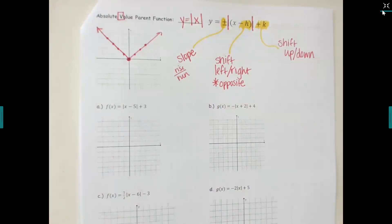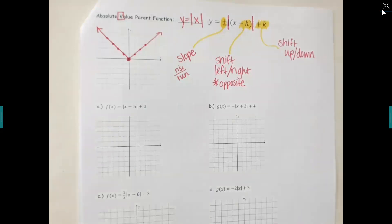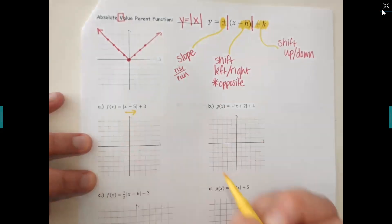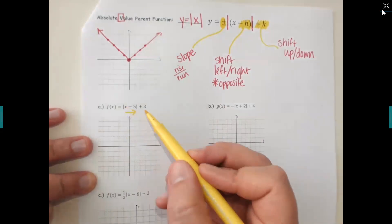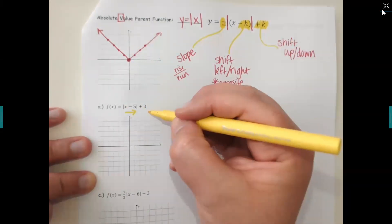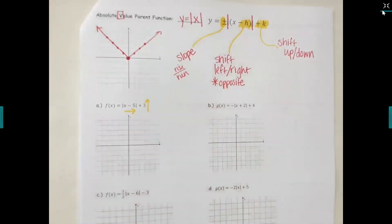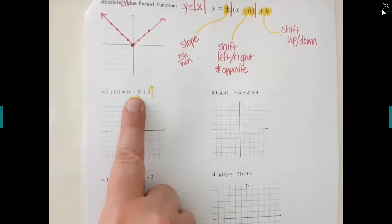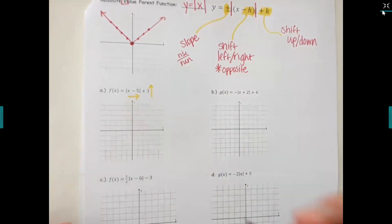Let's graph a couple of these. For the first one, inside the bars I have a minus five. The number with x controls the left-or-right shift but we do the opposite — so minus five means we go to the right five. There's a plus three at the back, which controls shift up or down — so we go up. Count to the right five boxes, then up three boxes.